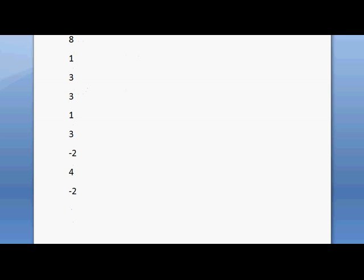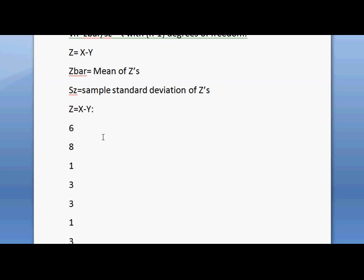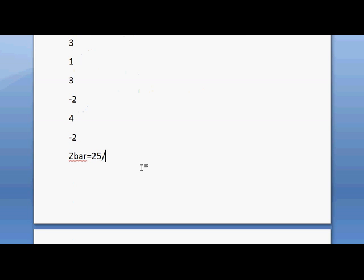Now let's find Z̄. Z̄ is the mean of the Z's. So Z̄ is the total of Z's—that is, if we add 6 + 8 + 1 + 3 + ... -2, we will get 25—divided by the total number of Z's, that is 10 people. 25 divided by 10 equals 2.5.